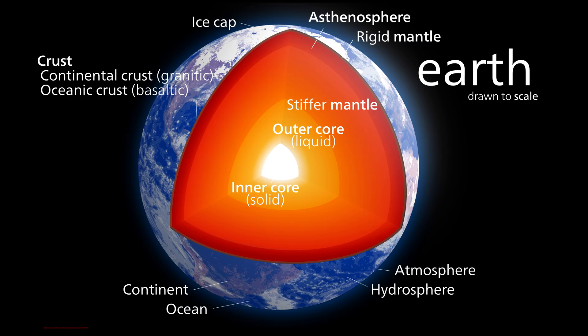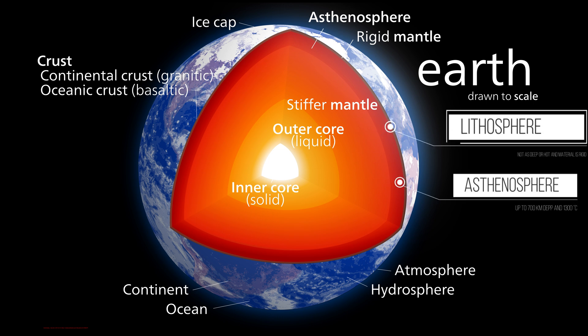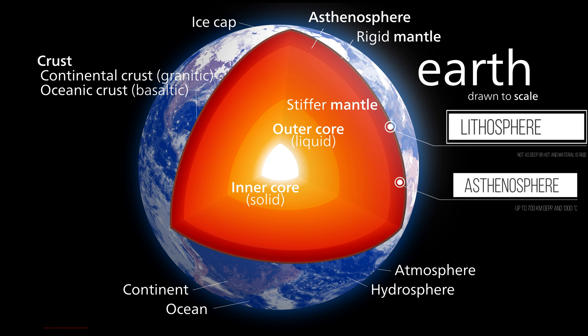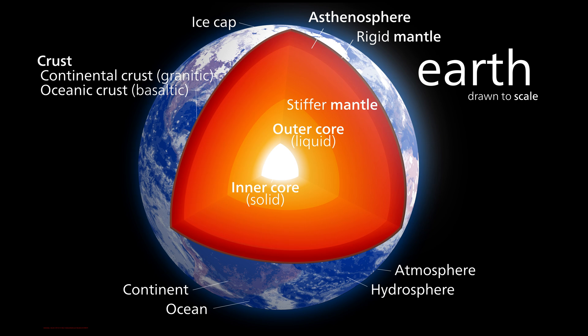Underneath the lithosphere, the asthenosphere exists. The lithosphere is colder and more rigid, whereas the asthenosphere is warmer and more fluid. The tectonic plates float and move on top of the liquid-like asthenosphere.